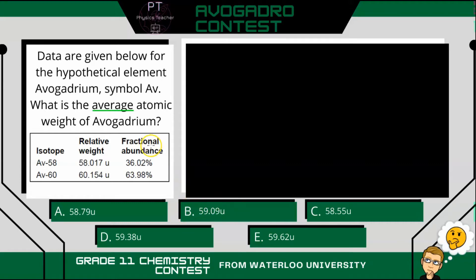The reason why it's wrong is this fractional abundance, also called isotopic abundance. This is the amount of some given isotope of an element that exists, expressed as a percentage of the total amount of this element. If the fractional abundance was 50% for Av58 and 50% for Av60, then yes, the simple average would be correct. But that's not the case.